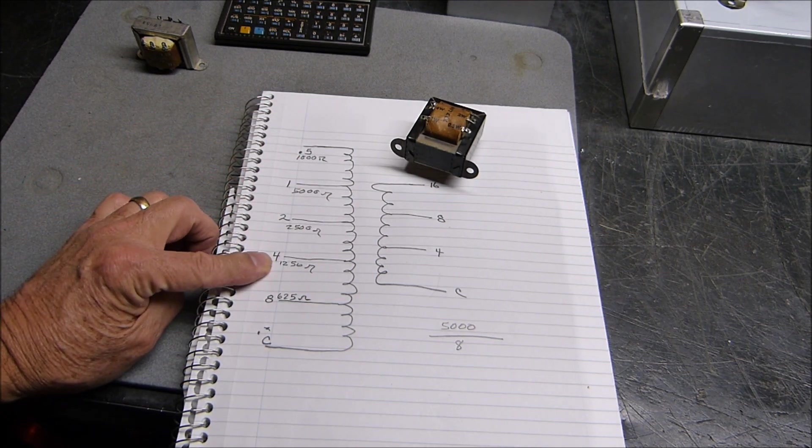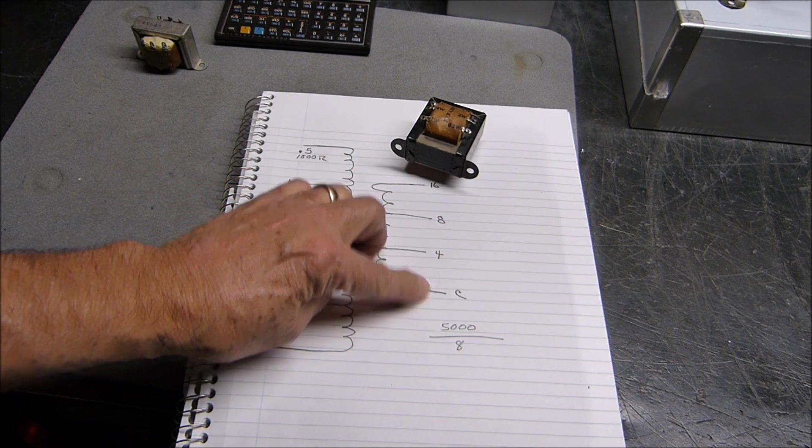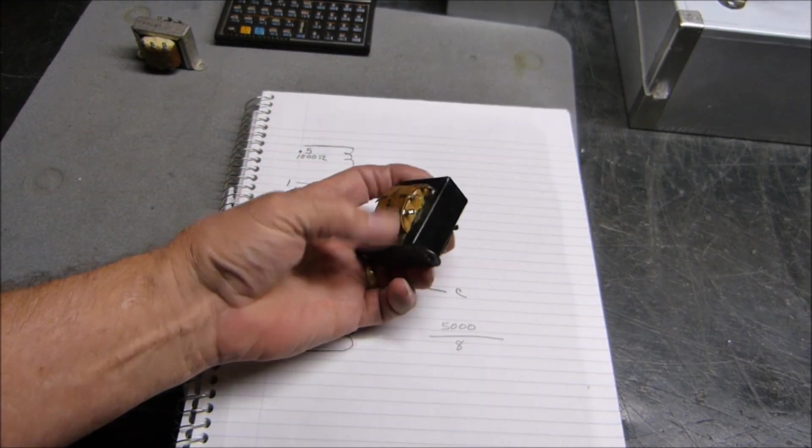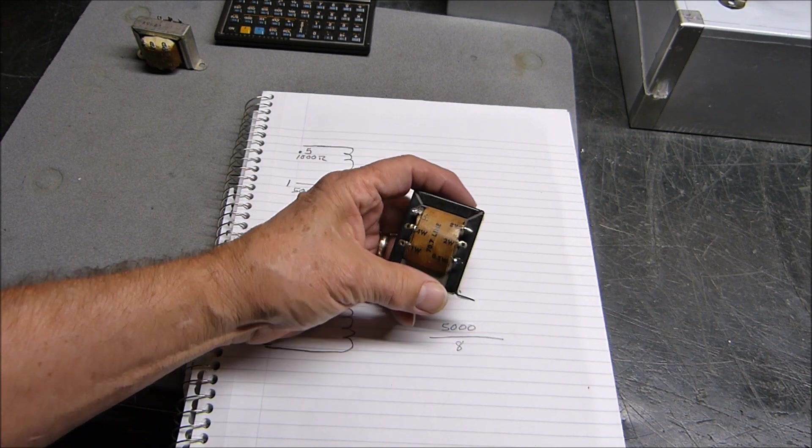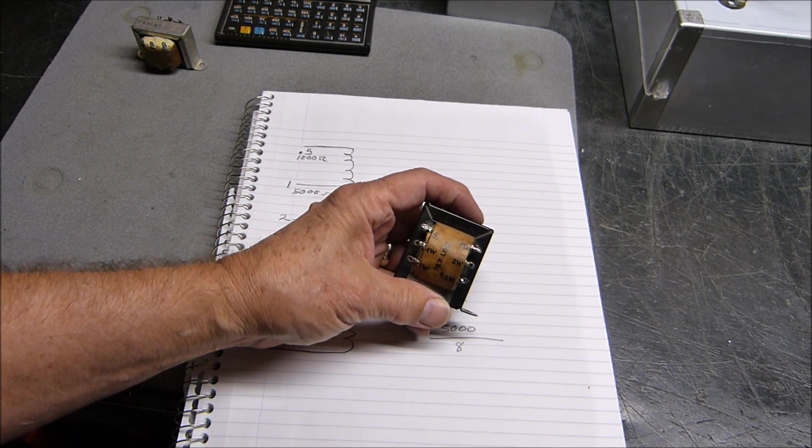If you wanted a 5,000 ohm, which is most common, be here and here, and the center tap would be on four. Then you get common 4, 8, 16. These things are dirt cheap.